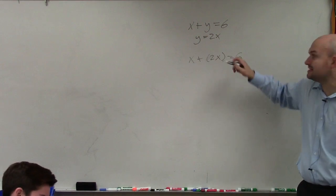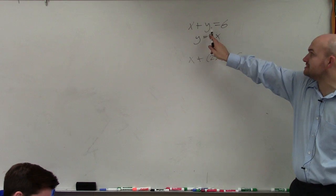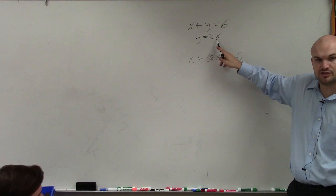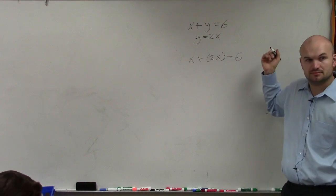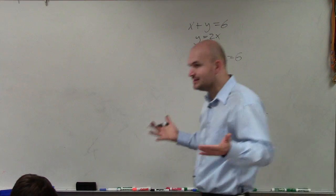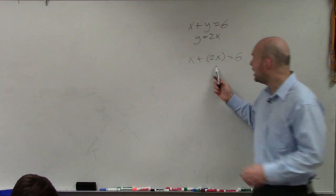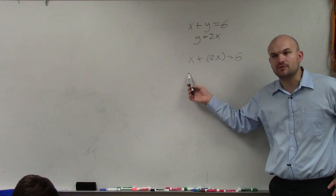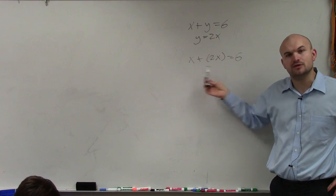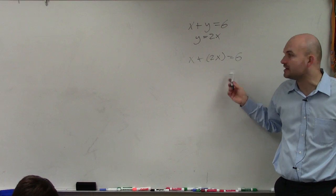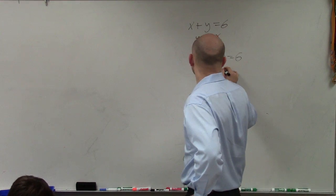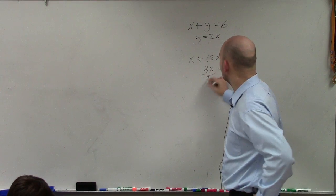Does everybody see what I did? I replaced the y in the first equation with what it equals from the second equation, which is 2x. Now, the reason why we did that is because now I have one equation with one variable. And we have solved equations that look like this — we can easily do this. One equation, one variable. I combine like terms and then I solve for x.